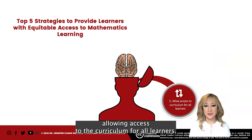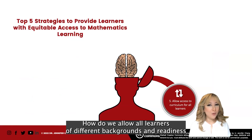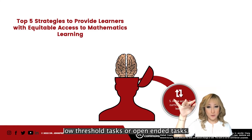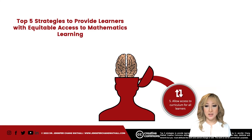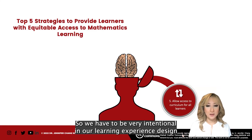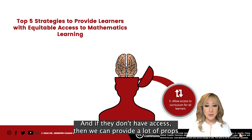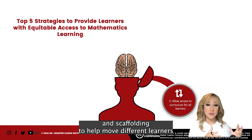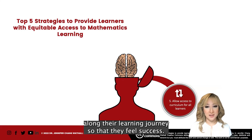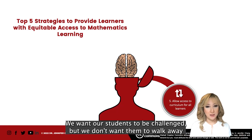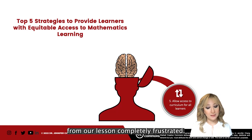The fifth strategy is about allowing access to the curriculum for all learners — how do we allow learners of different backgrounds and readiness to access the mathematics curriculum? This is in the form of high ceiling, low threshold tasks, or open-ended tasks. We must be intentional in our learning experience design so everybody can access the problem or scenario. If they don't have access, we can provide prompts and scaffolding to help move different learners along. There's a very fine line between frustration and challenge — we want students to be challenged, but not walk away completely frustrated.